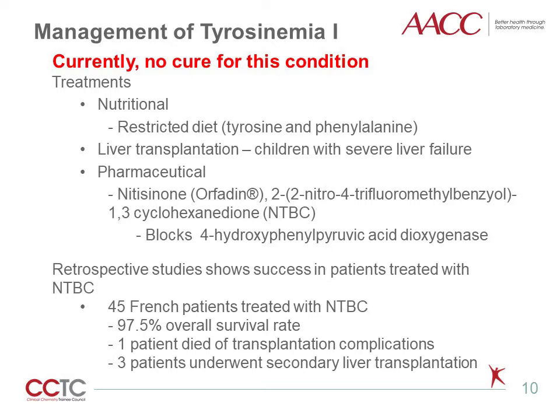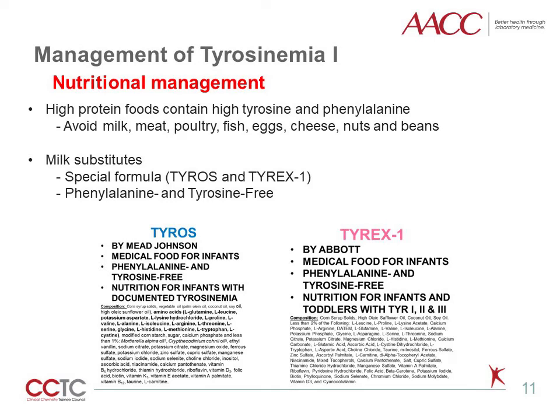Niticinone interferes with the second step of tyrosine catabolism, where it inhibits 4-hydroxyphenylpyruvic acid dioxygenase and prevents the accumulation of fumarylacetoacetic acid and its conversion to succinylacetone. However, niticinone intake increases the blood concentration of tyrosine, requiring patients to have a low tyrosine and phenylalanine diet to prevent harmful effects. Niticinone and dietary management should be initiated as soon as diagnosis of tyrosinemia 1 is confirmed, and studies suggest much better outcomes when treatment is started at an asymptomatic stage.